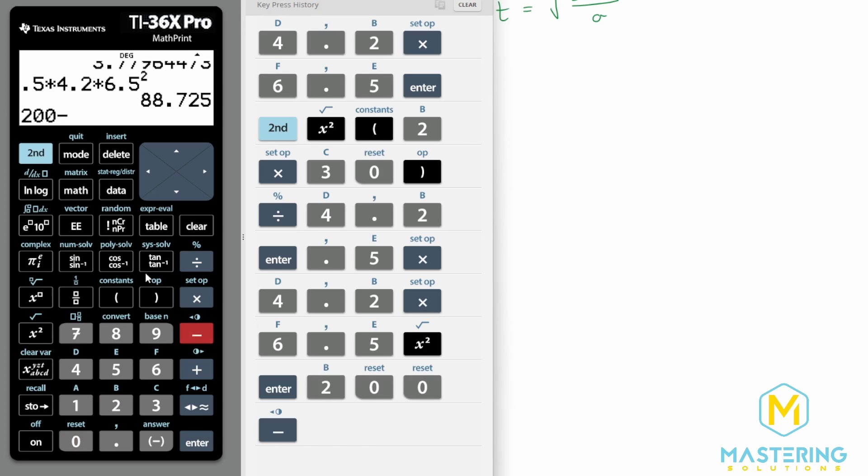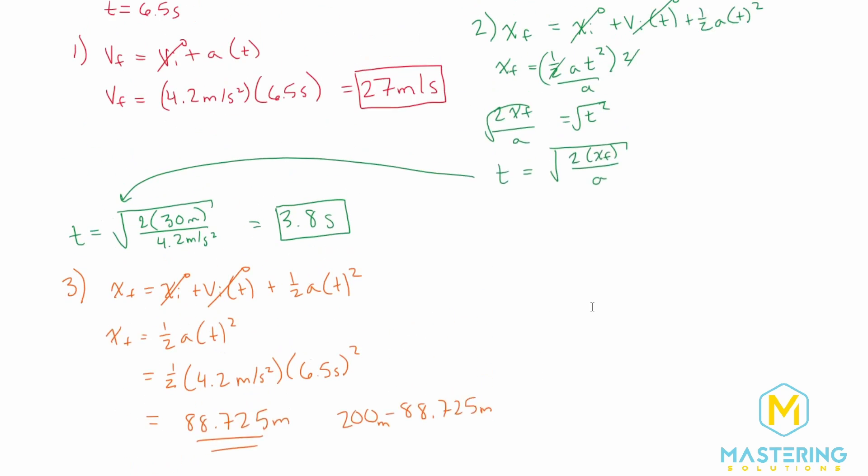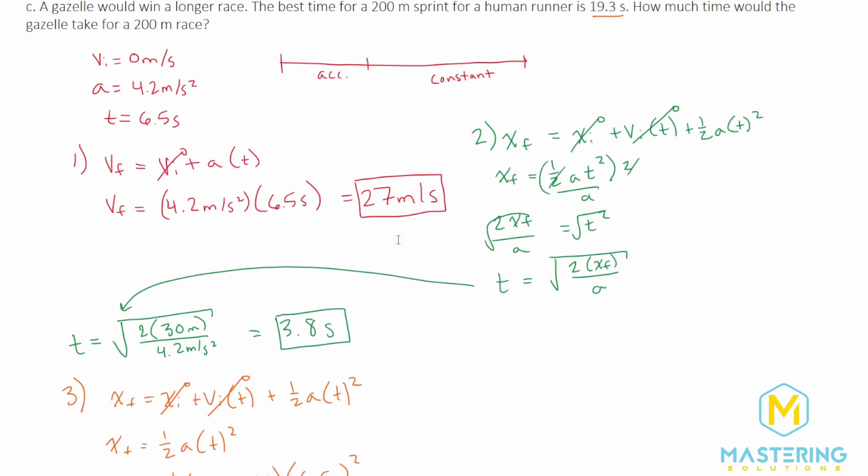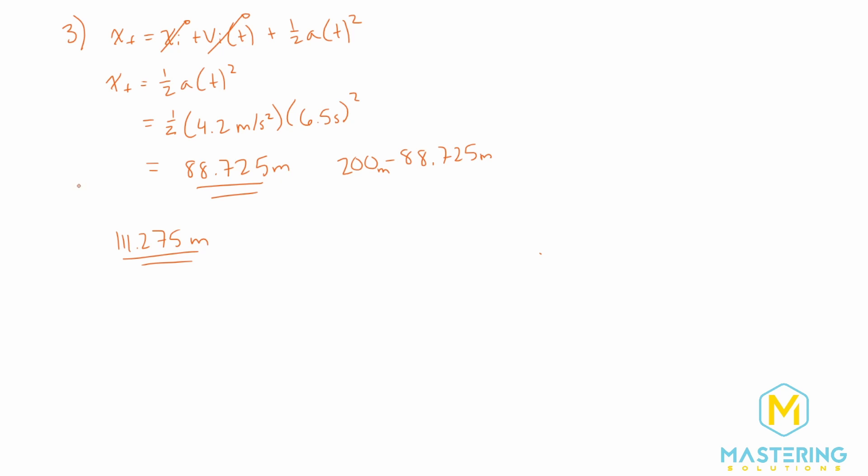So 200 subtracting the answer will give us 111.275 meters. So this is how much we have left in the race when the gazelle is going at the constant speed. In the first part up here, we already figured out what the maximum speed was for the gazelle. We said it was 27.3. We rounded it to 27 for the answer, but we'll use 27.3 for down here. And so what we need to do is we need to figure out for this section, we already know that up here, the time for the acceleration section was 6.5 seconds.